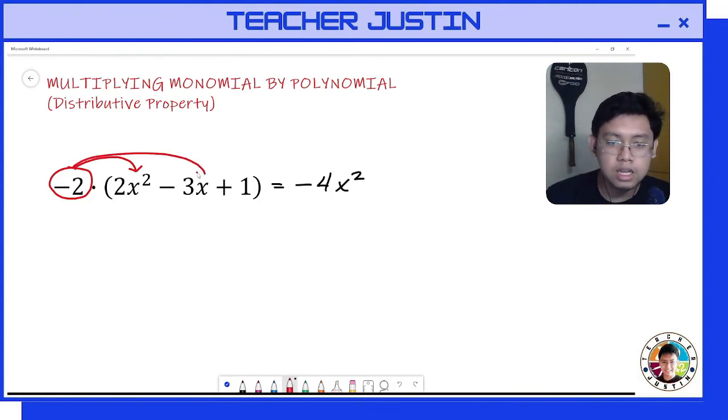So again we multiply negative 2 by negative 3. Negative times negative is positive, so we have positive 6. Then we copy the variable x.